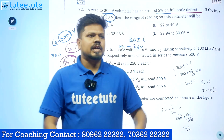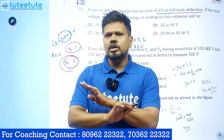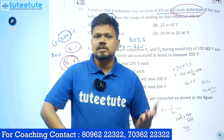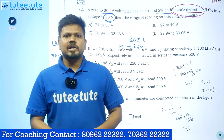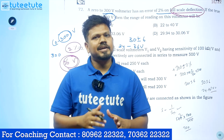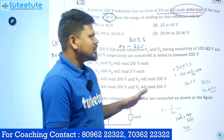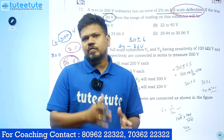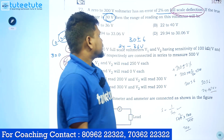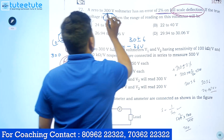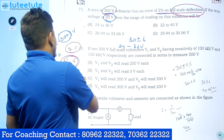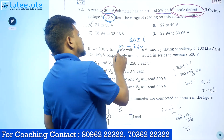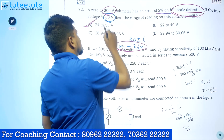No need for formulas like percentage error, guaranteed error, or limiting error separately. Since they mentioned full scale deflection, we calculate on 300. Plus or minus 6 volts. So the answer is 24 to 36 volts — option A is correct. This model was already discussed in our previous year question explanations before the exam.